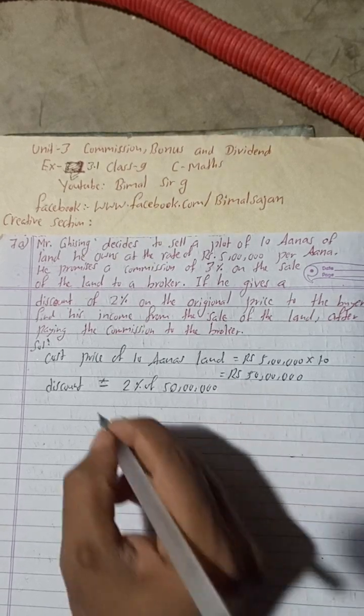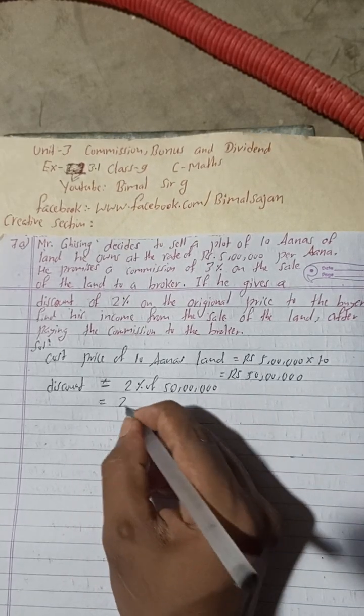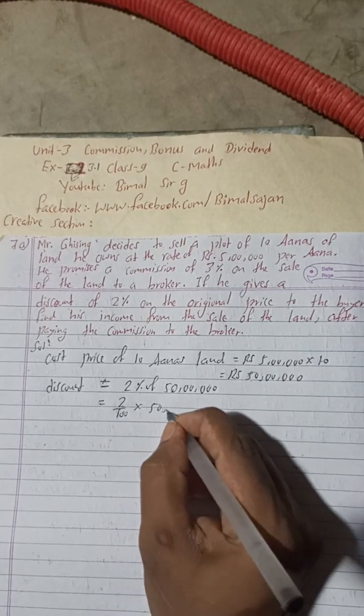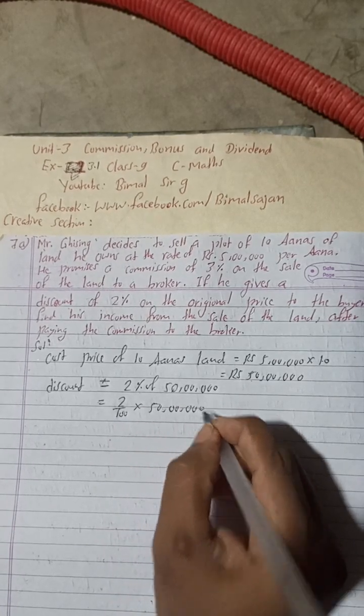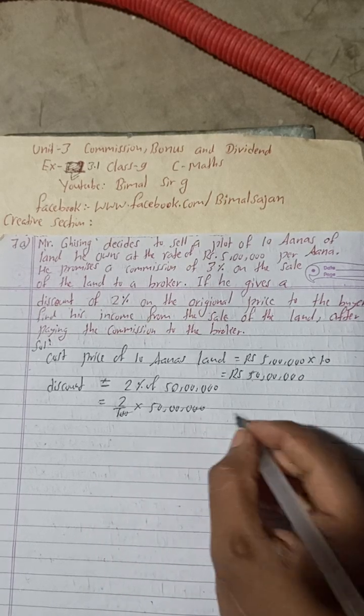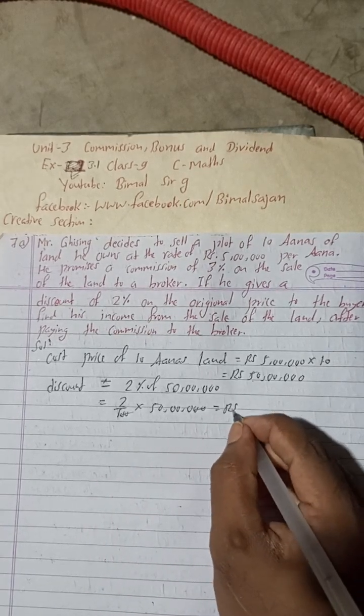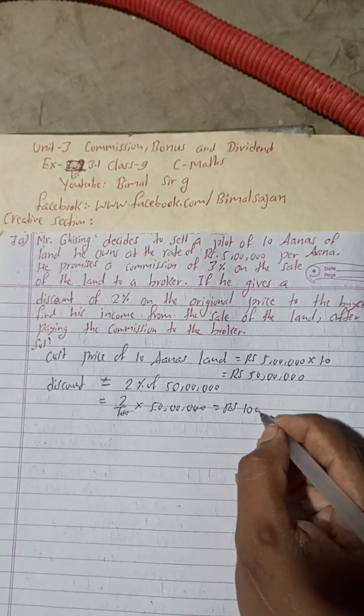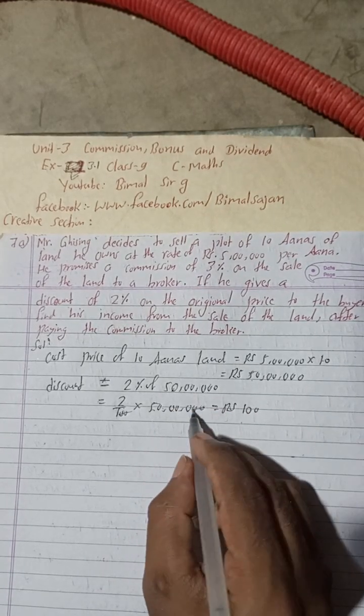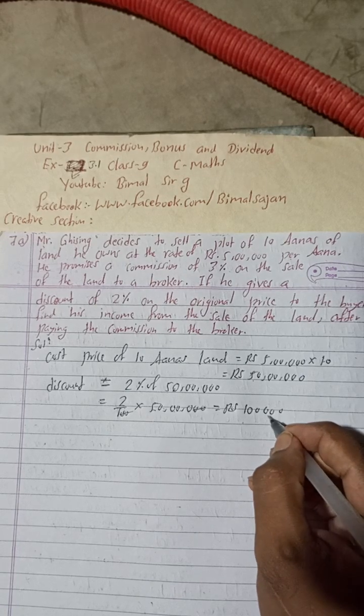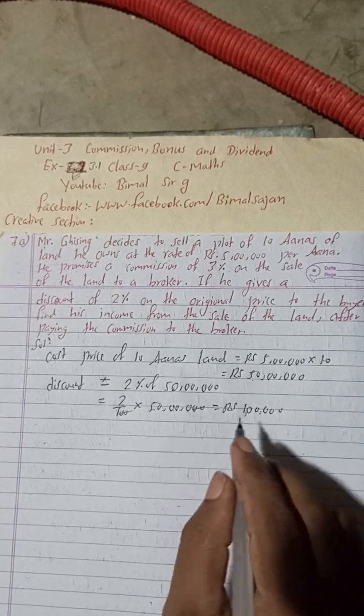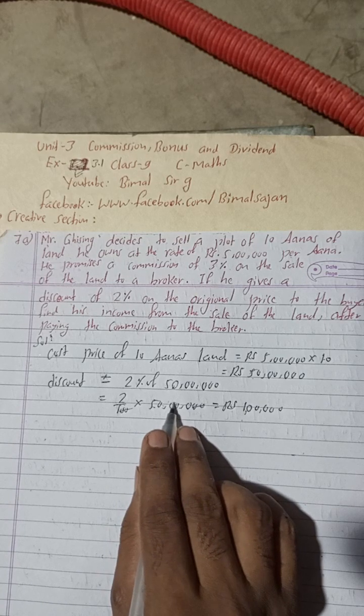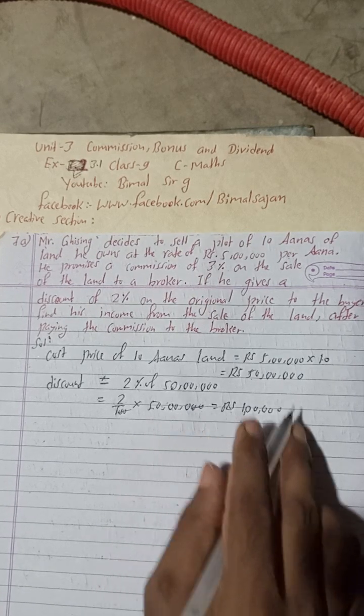Is equal to 2 divided by 100 of 50 lakh, 2 zero 2 zero, so this is Rs 5 to the 10 and this zero, and there is how many zeros there, 1, 2, 3 zero, 1, 2, 3 zero. So this is here 1 lakh. Discount, discount is 1 lakh.